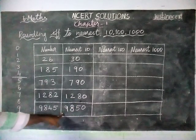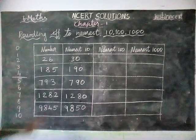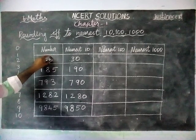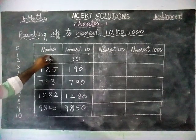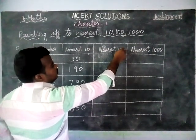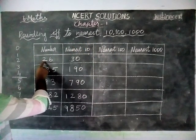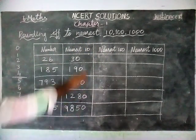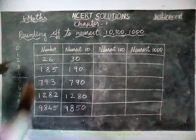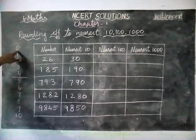Now we are going to round off to nearest 100. When rounding off to nearest 10, we look at the ones place. When rounding off to nearest 100, we have to look at the tens place. For 26, the tens place is 2. Since 2 is in the 1–4 range, we choose the previous 0.